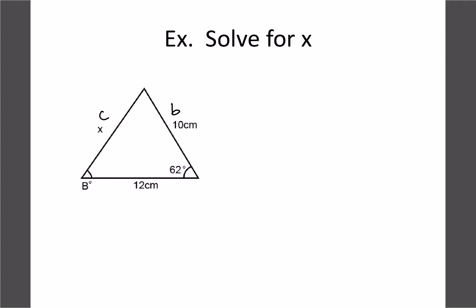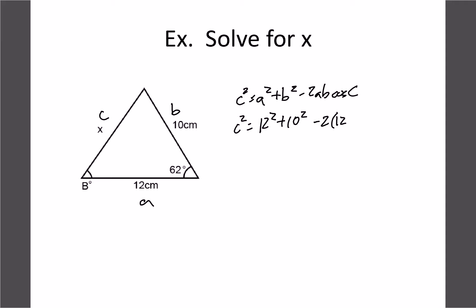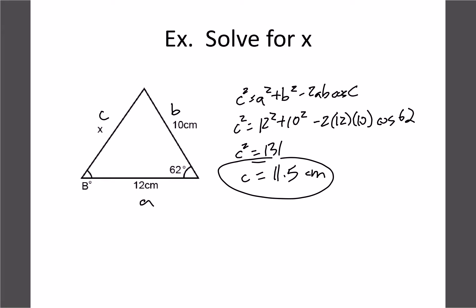So this is side c, the other sides are a and b. Rewriting: c² = 12² + 10² − 2(12)(10)·cos 62°. On the calculator: 12² + 10² − 2 × 12 × 10 × cos 62° gives 131. Since that's c², we take the square root and c works out to about 11.5. That makes sense because our other two sides were 10 and 12, so 11.5 is a reasonable answer.